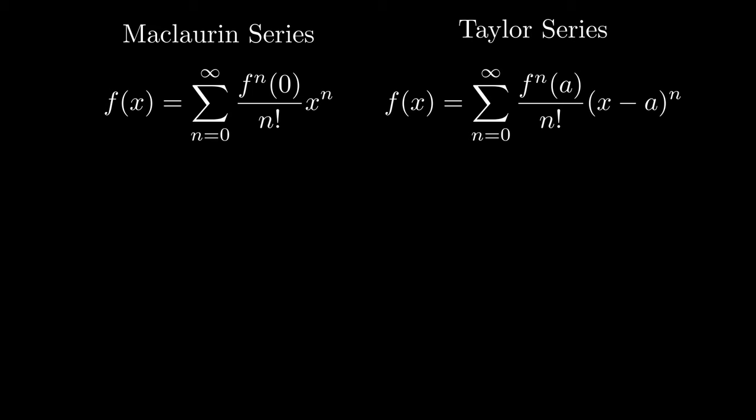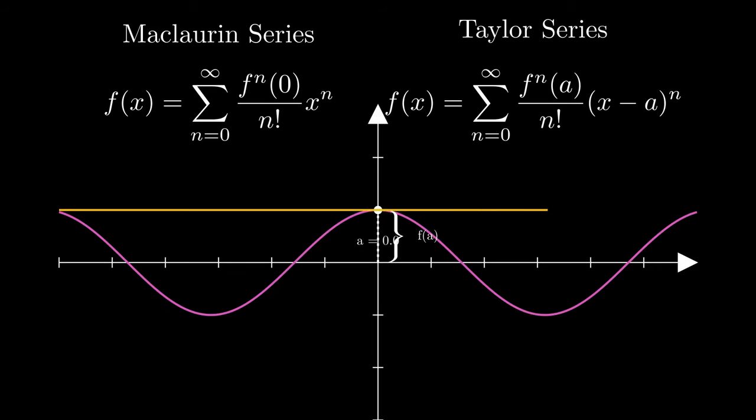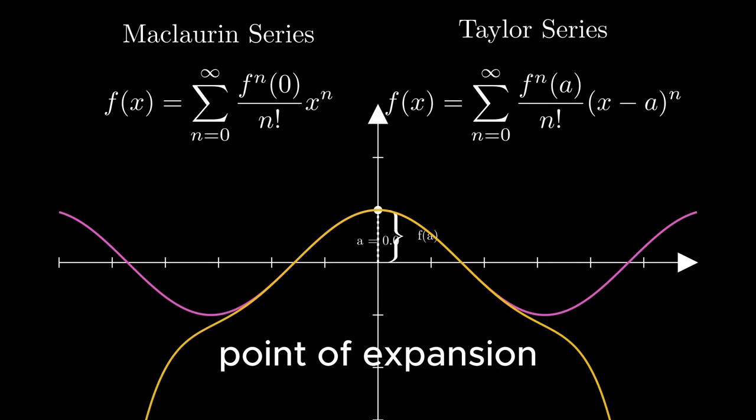Now let's try to figure out what that 'a' signifies. Let's revisit this animation. You might see the expansion starts from x equals 0, and the point remains stationary. This is where the approximation starts and is hence called the point of expansion.